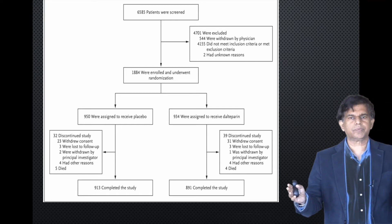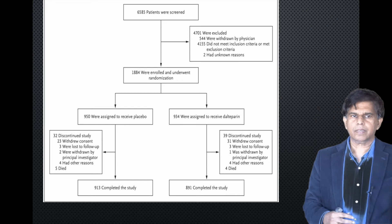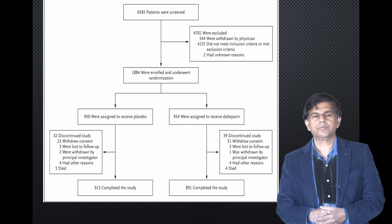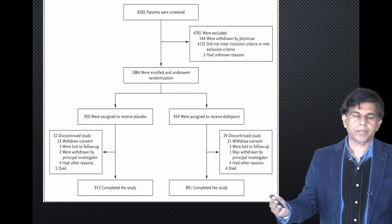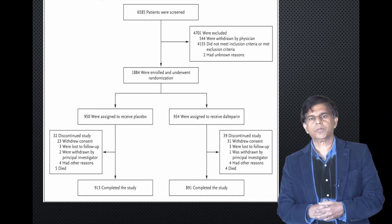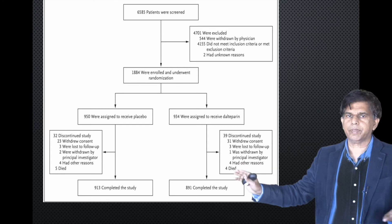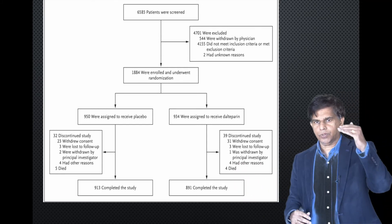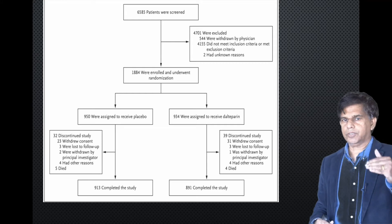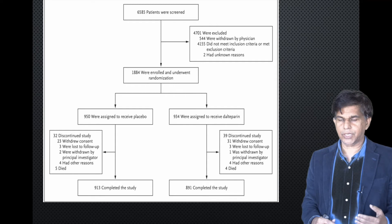We took this example from the New England Journal of Medicine. There was a study looking at the incidence of clotting — DVT or pulmonary embolism — in people who had heparin bridging before a procedure versus no heparin bridging. The first thing you want to do is look at the flow diagram to see how they conducted and recruited the study and calculated the sample size.